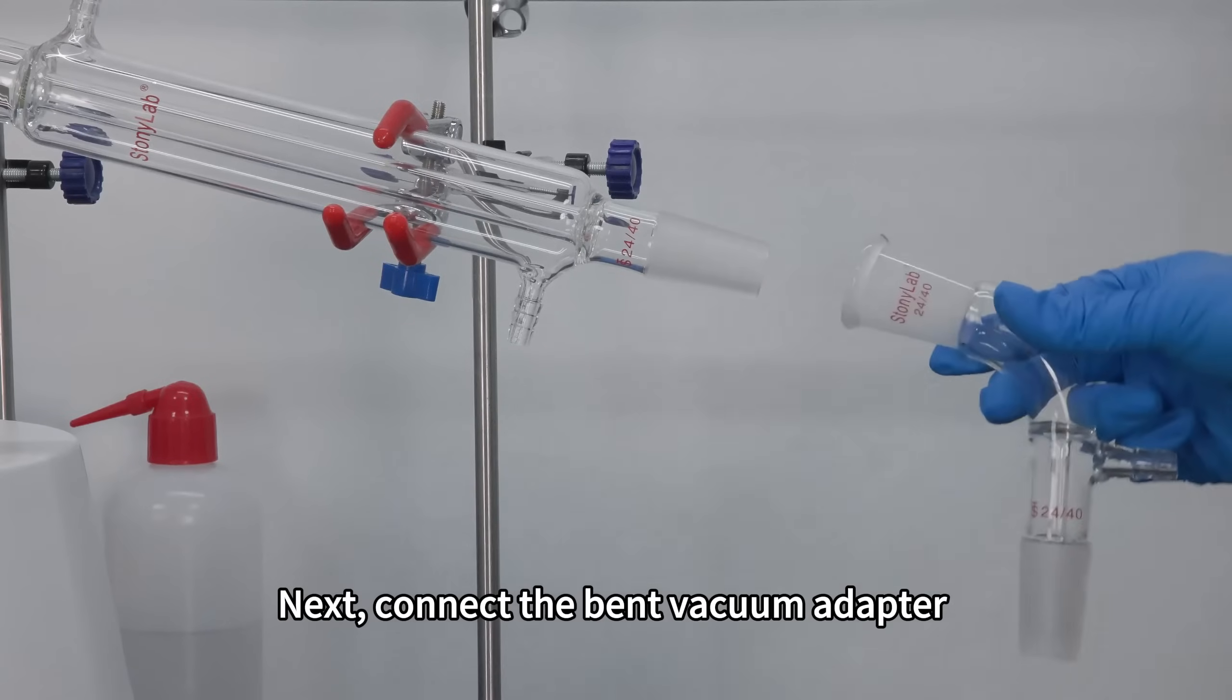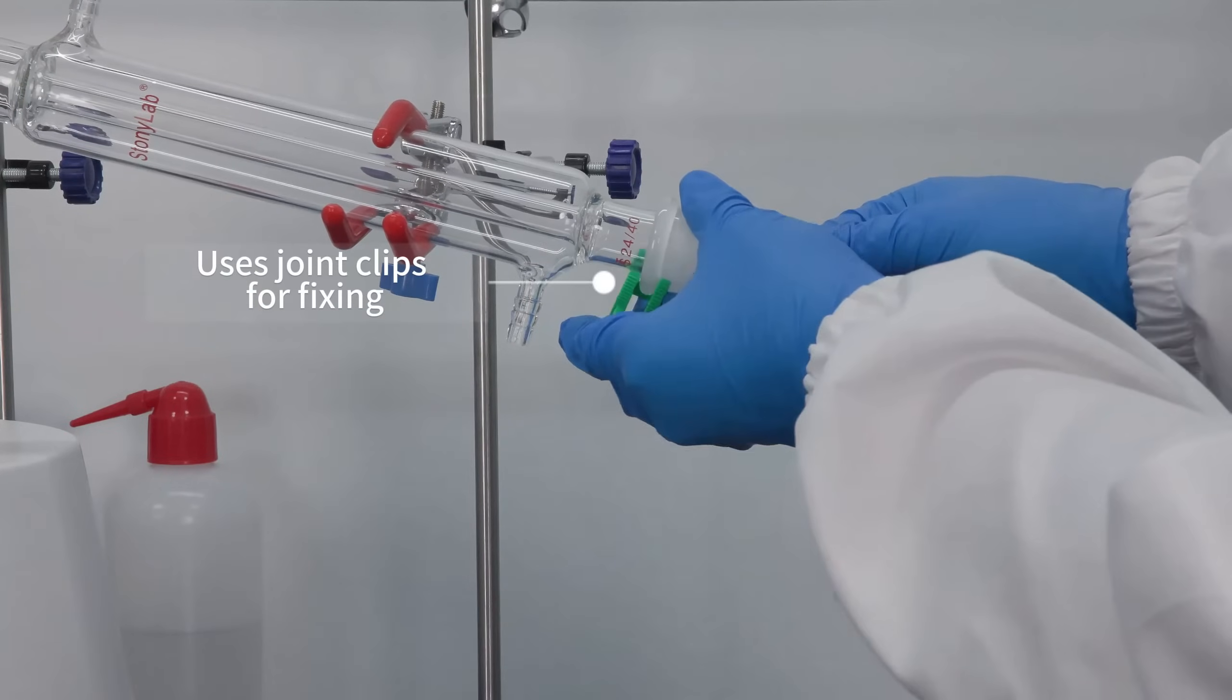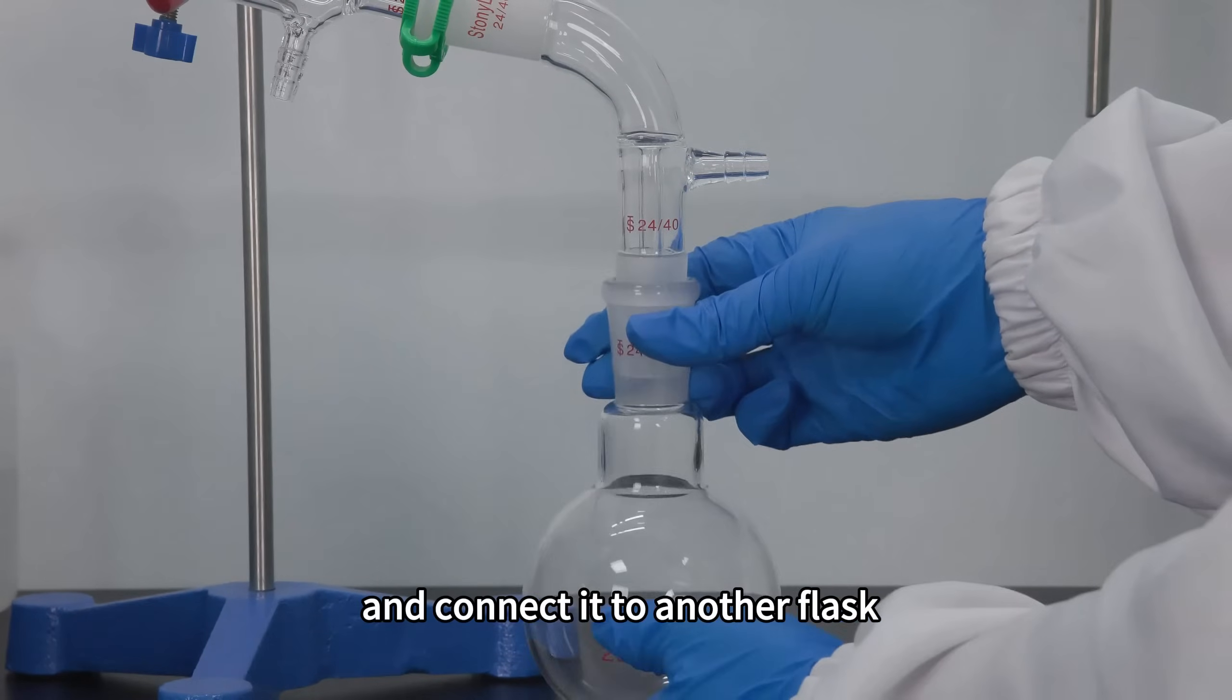Next, connect the bent vacuum adapter to the other end of the condenser and connect it to another flask.